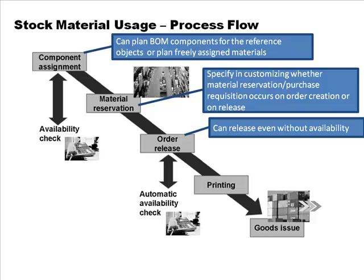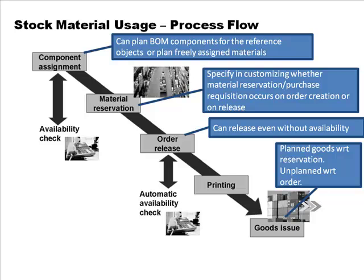You can release the order even without availability confirmation. Finally, goods are issued against the reservation — that is, planned goods are issued with reference to the reservation. However, there may also be unplanned goods, because in maintenance it is possible that some materials are required that you didn't plan for. Unplanned material is issued against the order, not against a reservation. The difference is: if you issue against a reservation, the system cancels the reservation; if you issue without a reservation, you are simply taking the material directly.